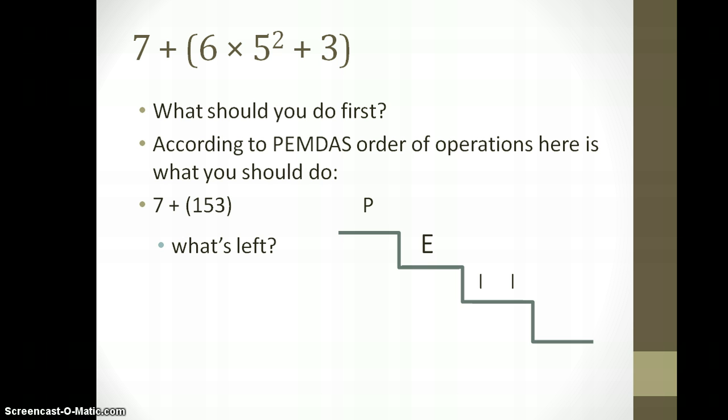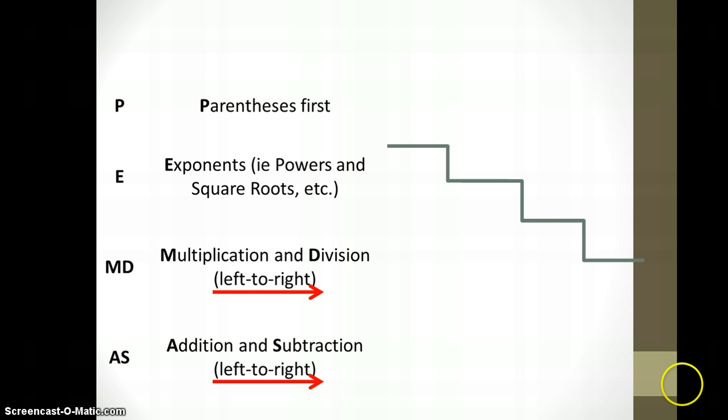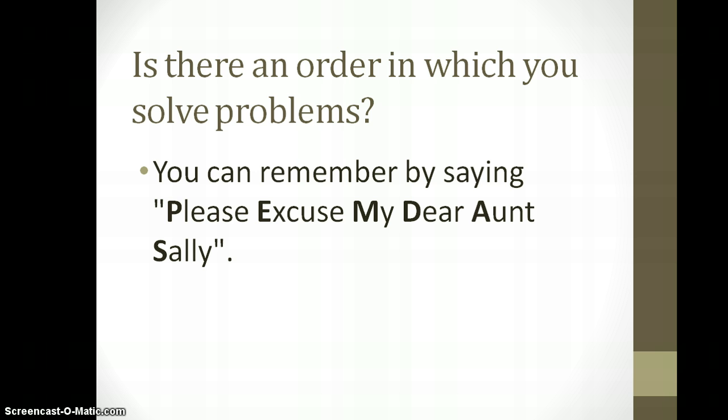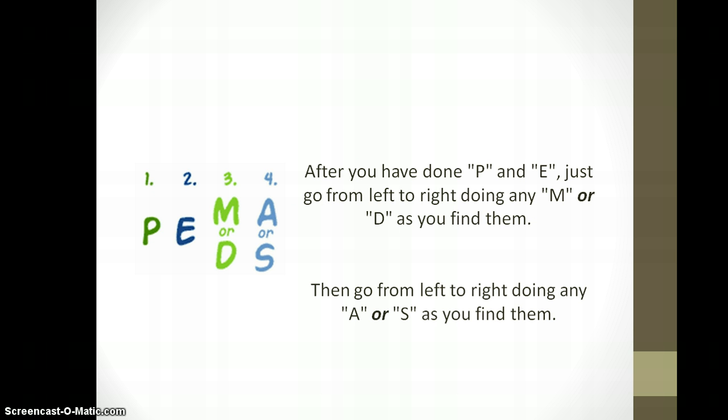All right. That's what we got. We got an answer of 160. Let's do maybe one last example. Multiplying and dividing. Is there an order in which you solve problems? Yes. You can remember it by saying, please excuse my dear Aunt Sally. You could also say, please excuse dear my Sally Aunt. Because multiplying and dividing can be switched, and so can Aunt and Sally. After you have done P and E, you just go from left to right for doing your multiplying and dividing. You go from left to right for your adding and subtracting. But again, you will multiply and divide before you add or subtract.